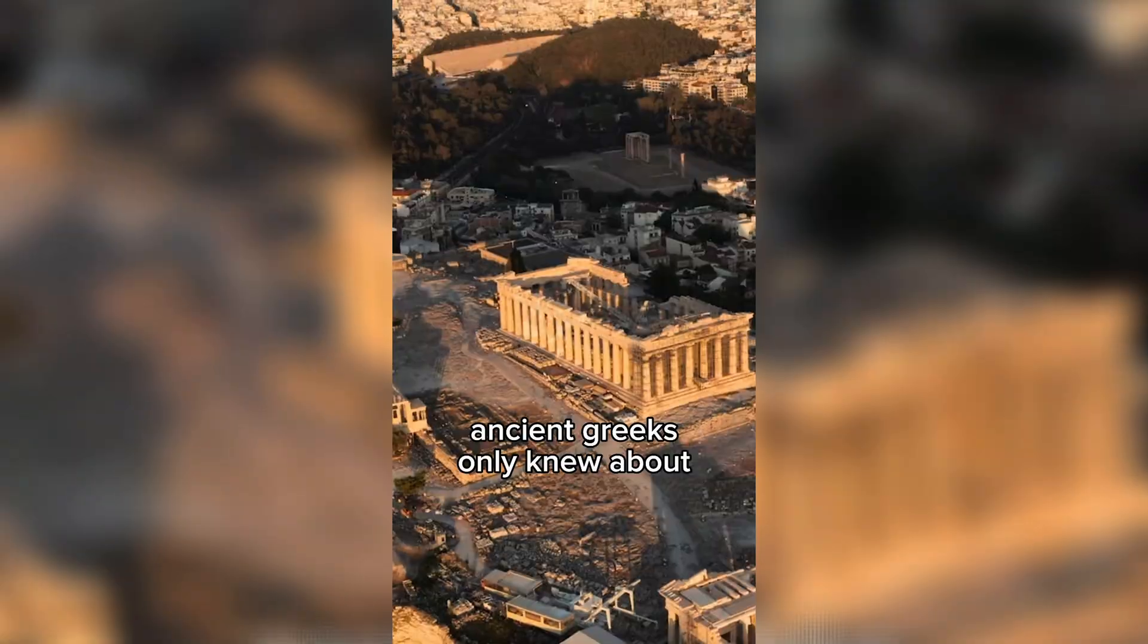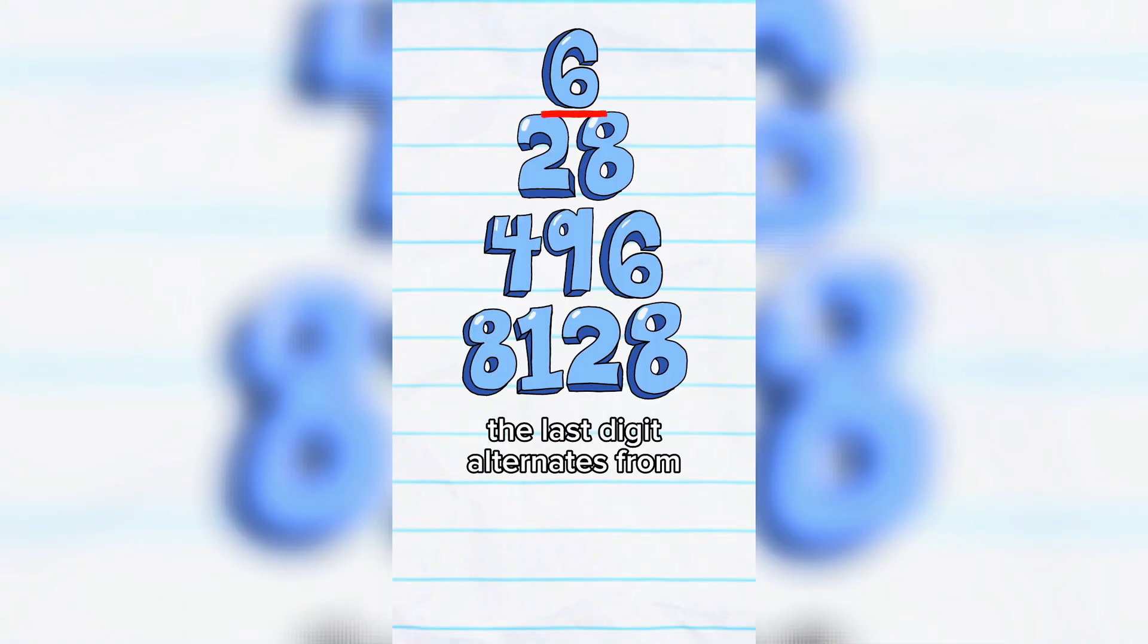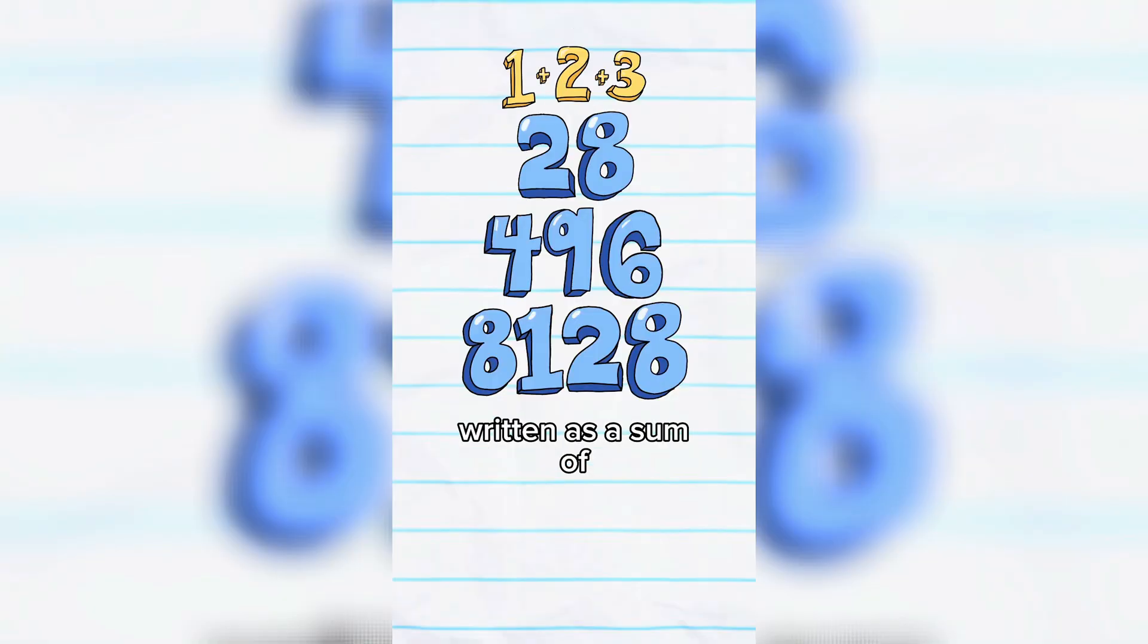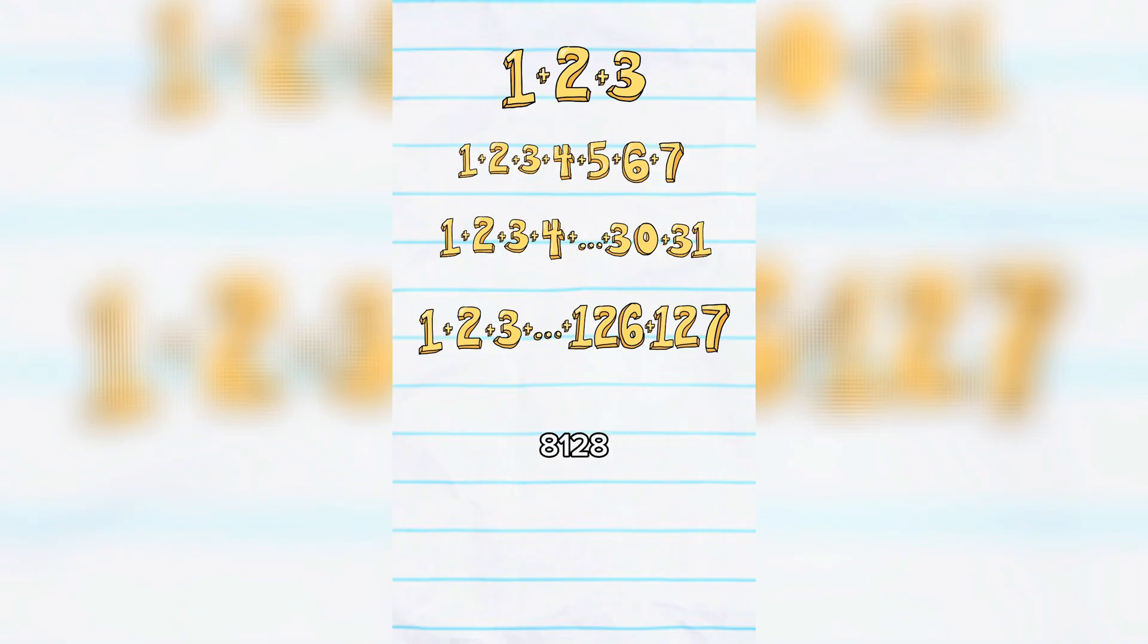Now, for a thousand years, ancient Greeks only knew about these 4 perfect numbers. And you might notice that the last digit alternates from 6 to 8. But it gets cooler. Each of the 4 numbers can be written as a sum of consecutive numbers, even for the last one, 8128.